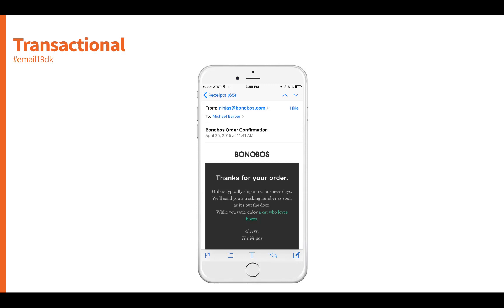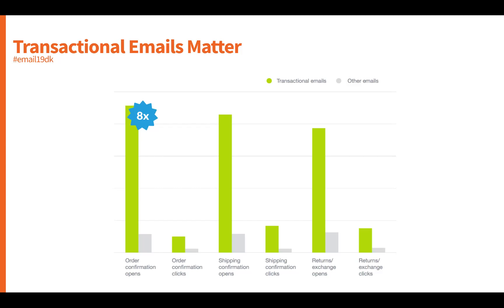Another segmentation opportunity is based on transactions. Transactional email campaigns are often fairly boring and we don't think of them as important, but that's not the case — they actually matter quite a bit. Recent studies show they are read or engaged with more than eight times more than promotional emails. Things like order confirmation, shipping confirmations, and returns and exchanges are probably being read more regularly than promotional campaigns.